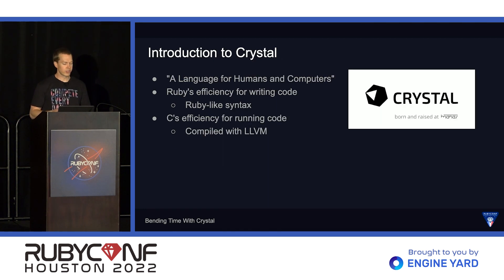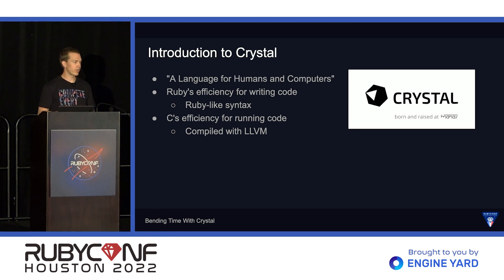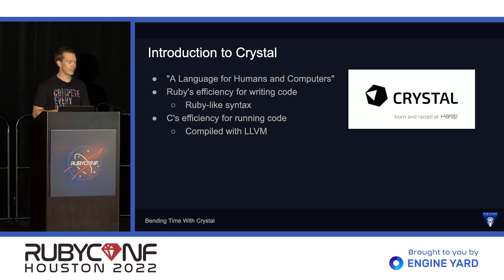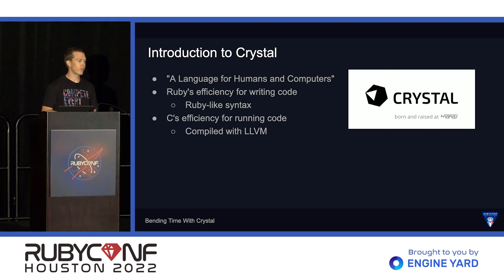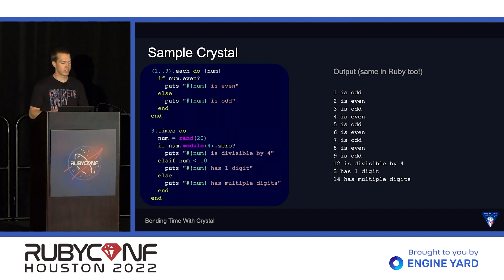Now I'm going to give just a quick introduction to Crystal. I think there was a talk at RubyConf Mini about Crystal, and I'm really excited to see that when the videos come out. Crystal's quote from their website is: "a language for humans and computers." I think that's a really cool way of thinking about it. For humans, we get Ruby's efficiency for writing code because Crystal has a Ruby-like syntax. And for computers, we get C's efficiency for running the code because Crystal is compiled with LLVM.